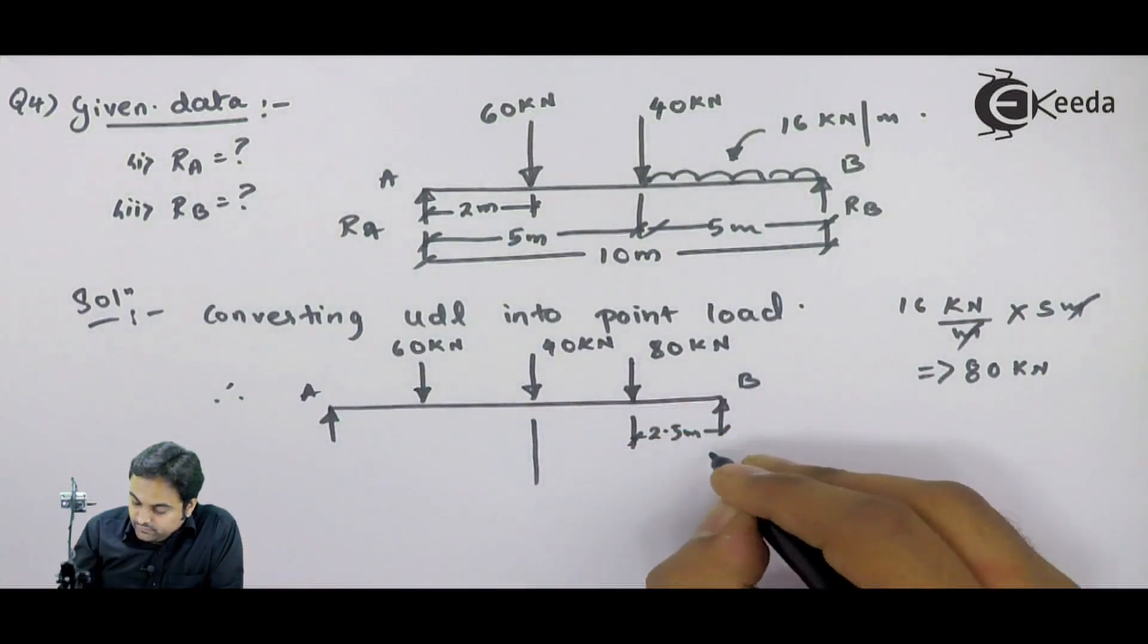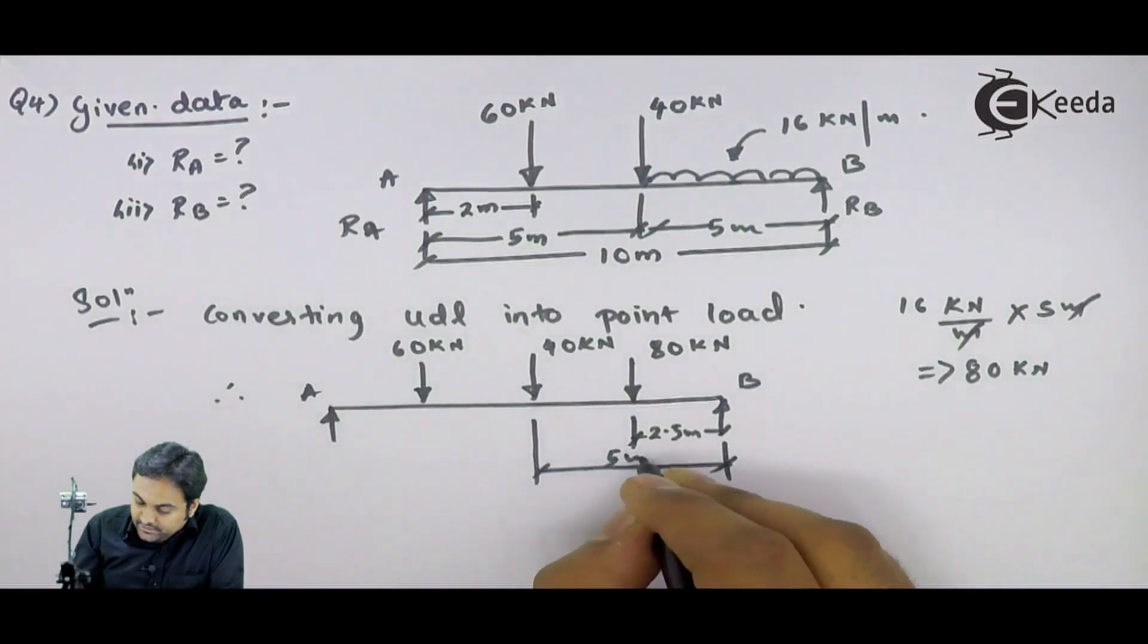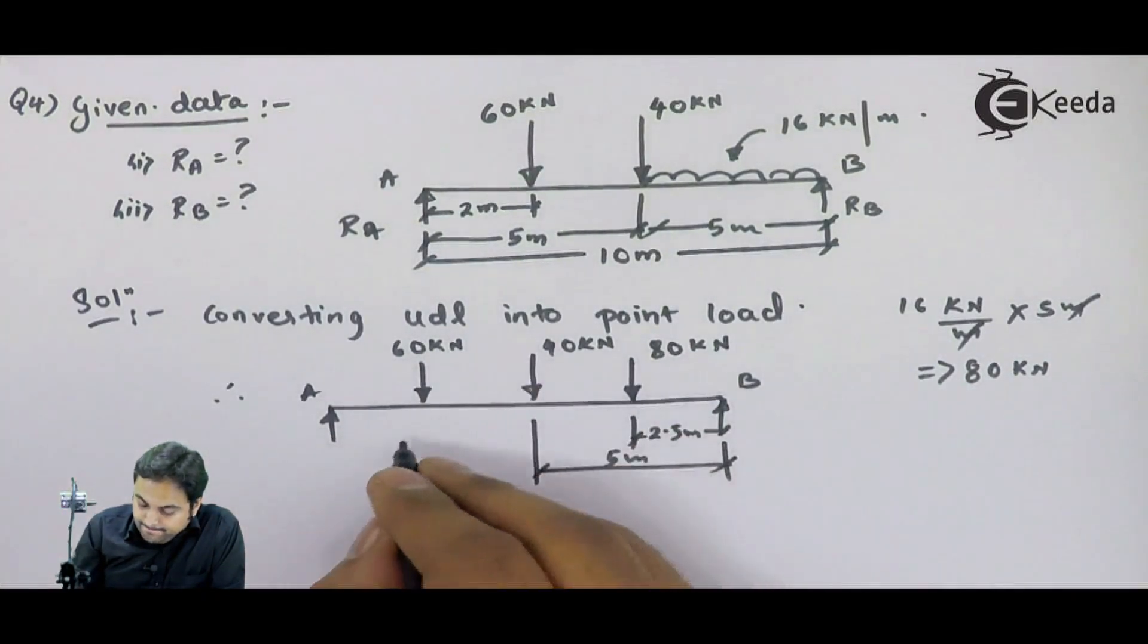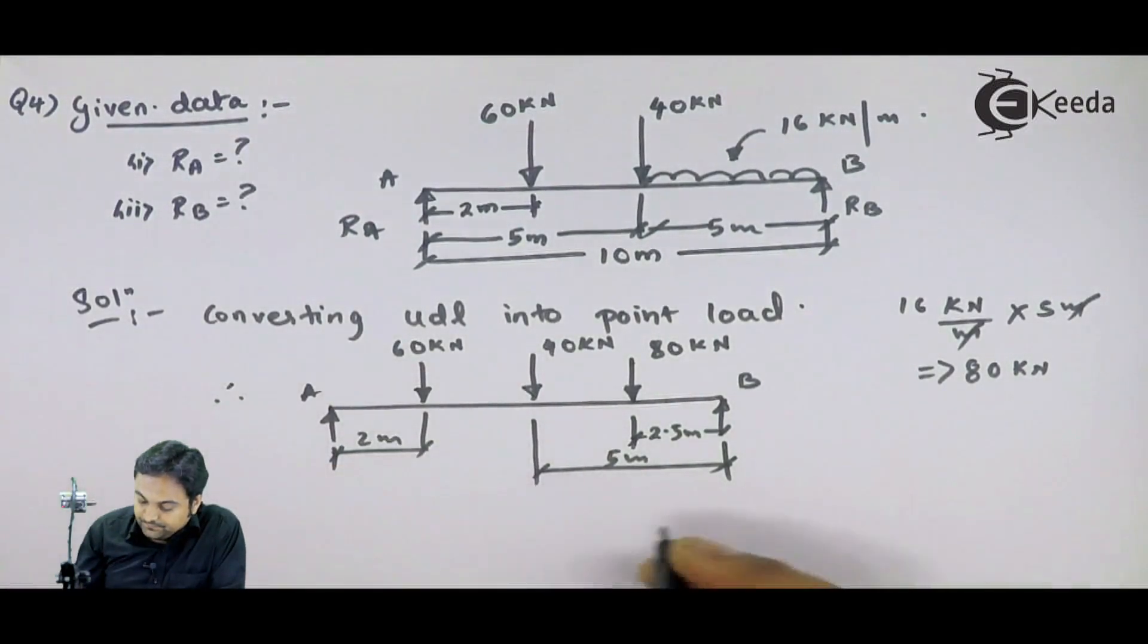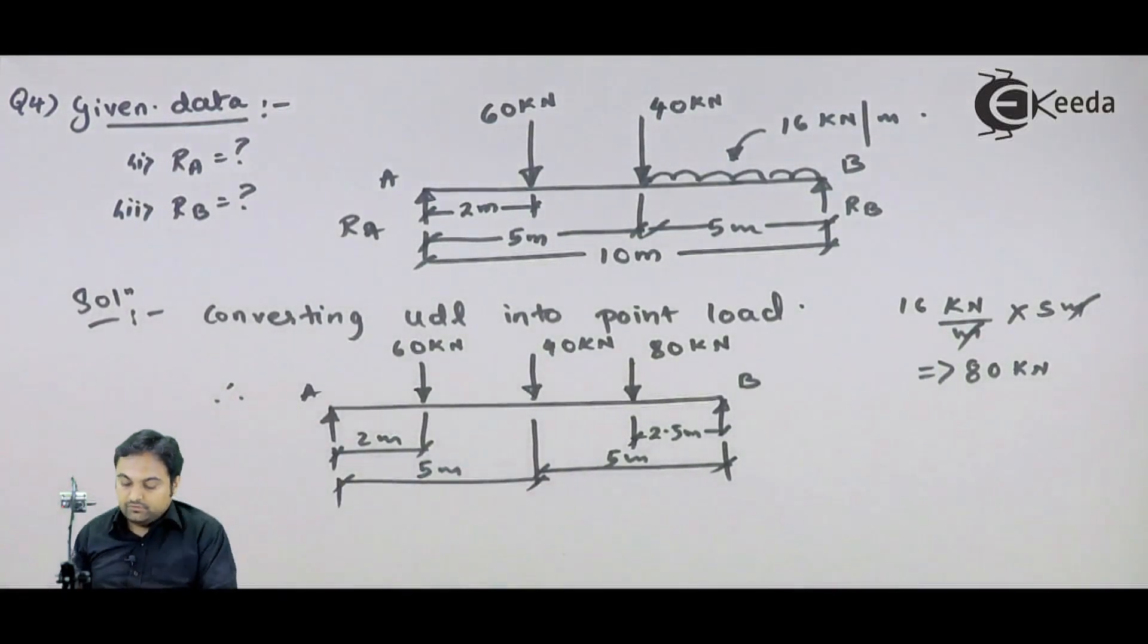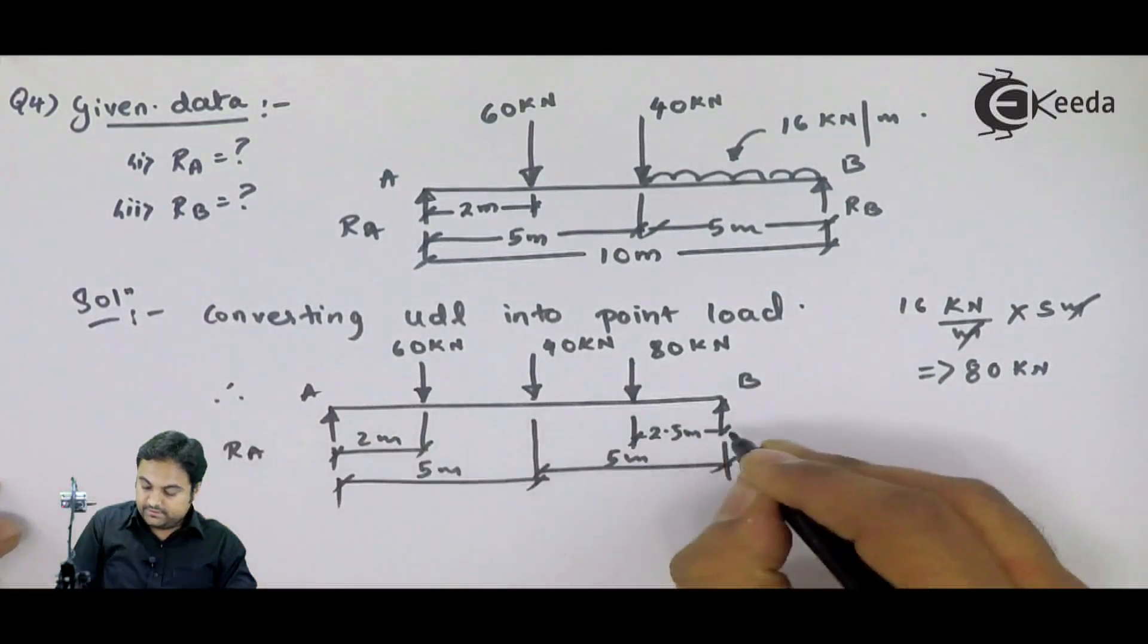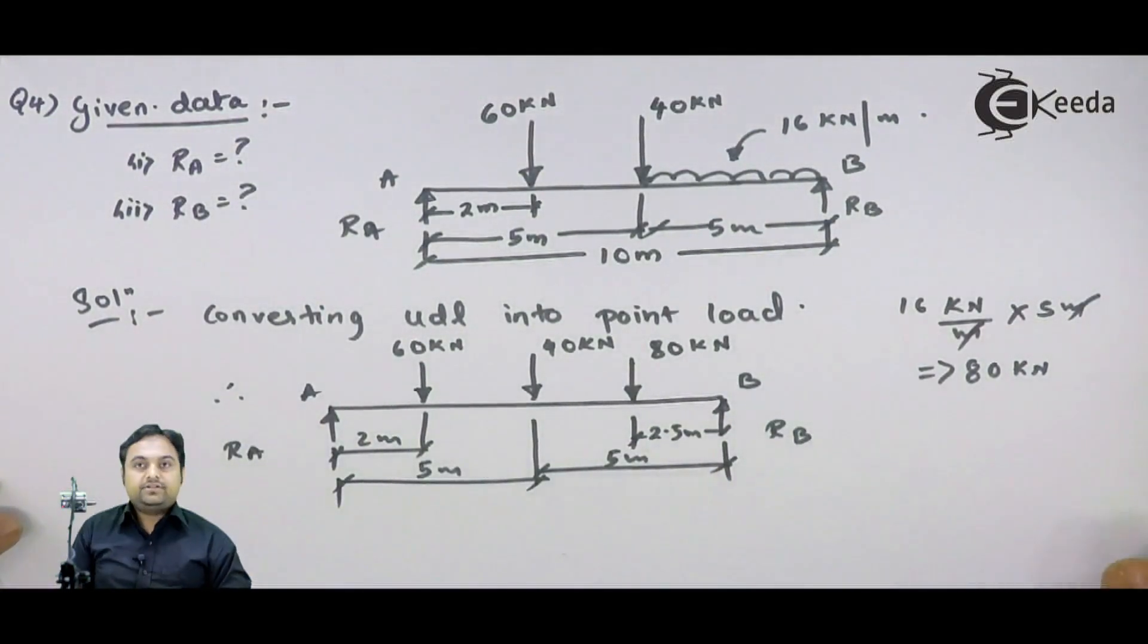Next, 40 kilonewton is at 5 meters from A, and B it is symmetric. 60 kilonewton is at 2 meters from A. This much is the question part. Now let us try to get RA and RB, reaction at A and reaction at B.